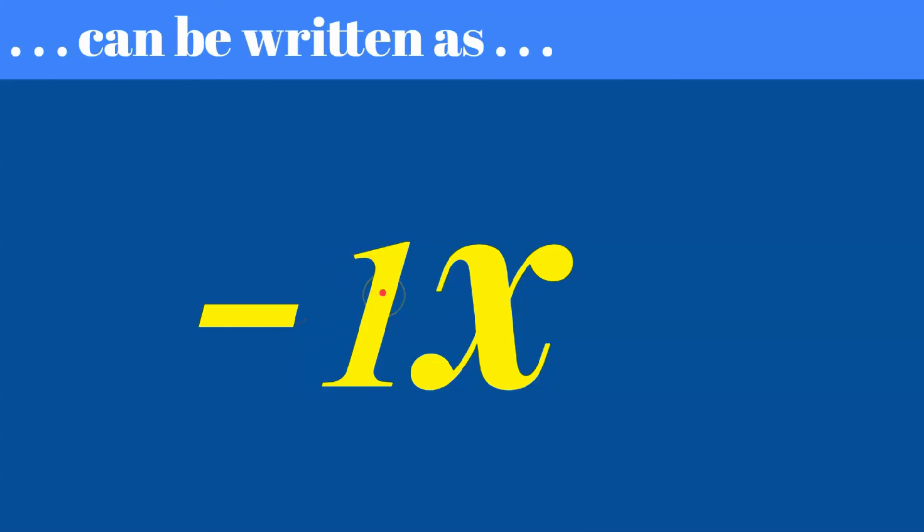So that one is still invisible and when the negative sign is there, it means negative one multiplied by x. So remember, not only is that one invisible or in this case the negative one, there's an invisible multiplication sign between a coefficient and a number.